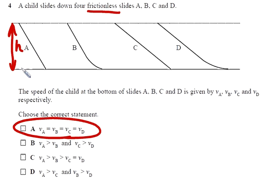Well, the drop in height is the only factor here. If we've got a frictionless slide, therefore the velocities at the bottom of all these are going to be the same.